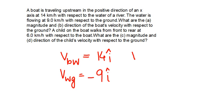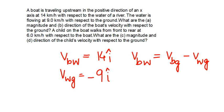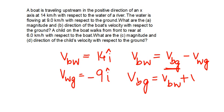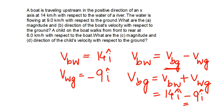As per the relative velocity formula, VBW — that is, velocity of boat with respect to water — is given as VBG minus VWG, where VBG is the velocity of boat with respect to ground and VWG is the velocity of water with respect to ground. So VBG is equal to VBW plus VWG. Now, VBW is 14 î and VWG is minus 9 î, so VBG — the velocity of boat with respect to ground — is 5 î.